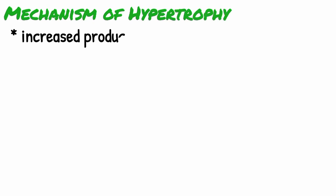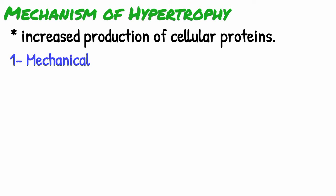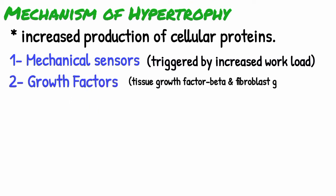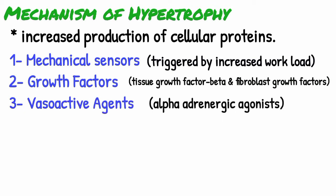If we talk about the mechanism of hypertrophy, hypertrophy is the result of increased production of cellular proteins. Hypertrophy can be induced by linked action of mechanical sensors that are triggered by increased workload, growth factors such as TGF-beta and fibroblast growth factors, and vasoactive agents such as alpha-adrenergic agonists.